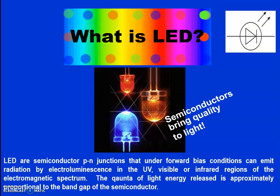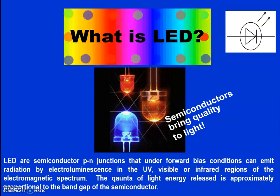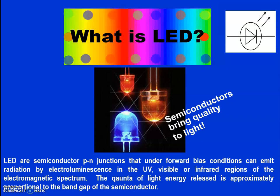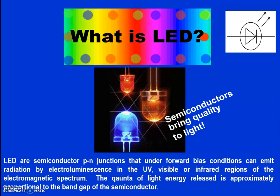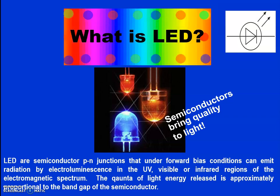What is LED? LEDs are semiconductor PN junction devices operated in the forward bias mode. The energy is radiated in the form of light by means of electroluminescence. The emitted radiation is in the range of UV, visible, or infrared regions of the corresponding electromagnetic spectrum. The quanta of light energy released is approximately proportional to the bandgap of the semiconducting material.